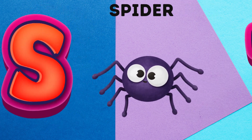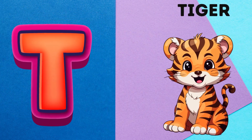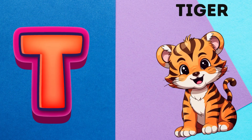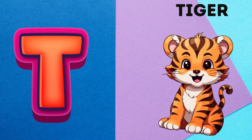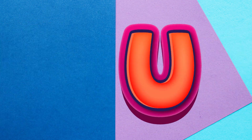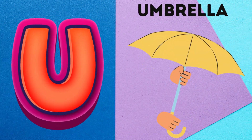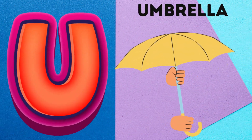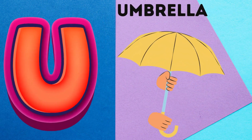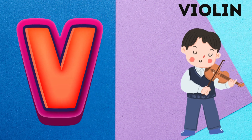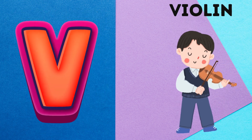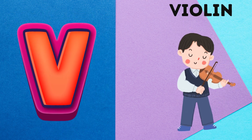S is for Spider. Sh. Spider. T is for Tiger. Da. Tiger. U is for Umbrella. U. Umbrella.